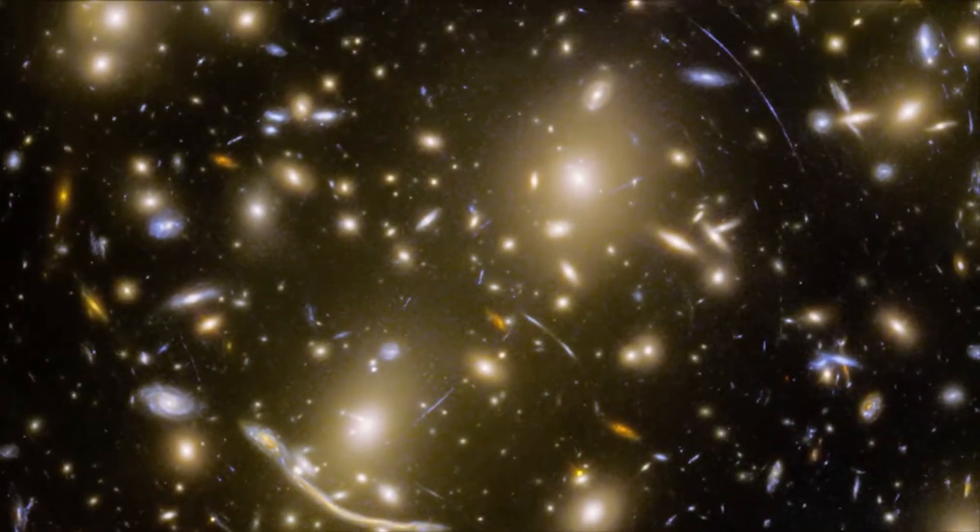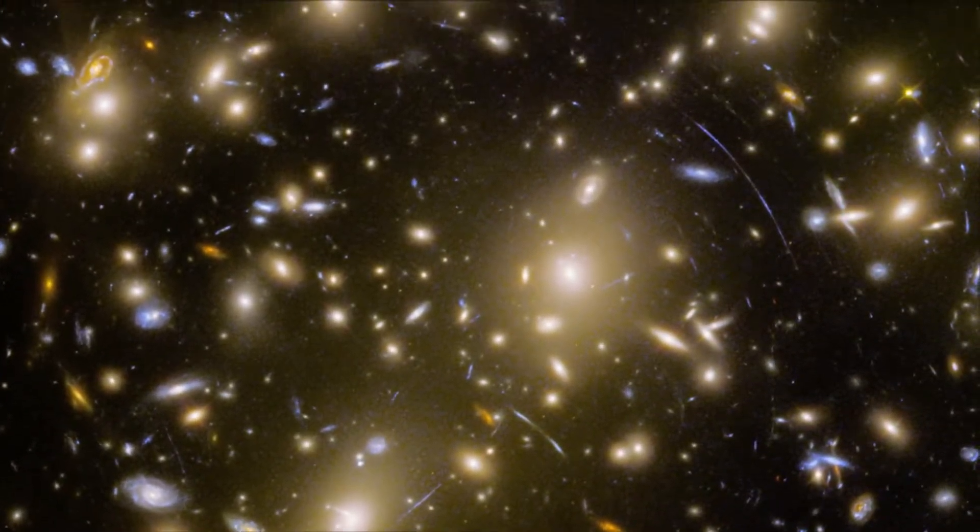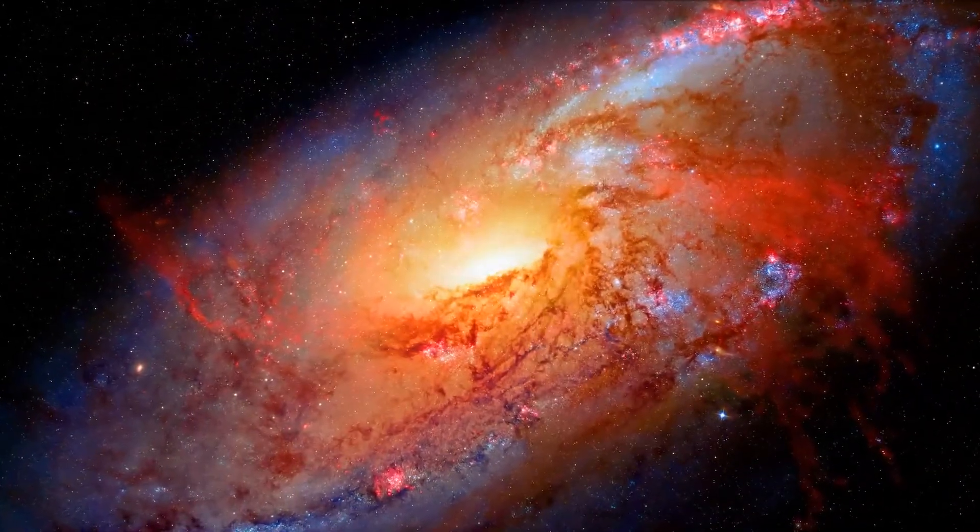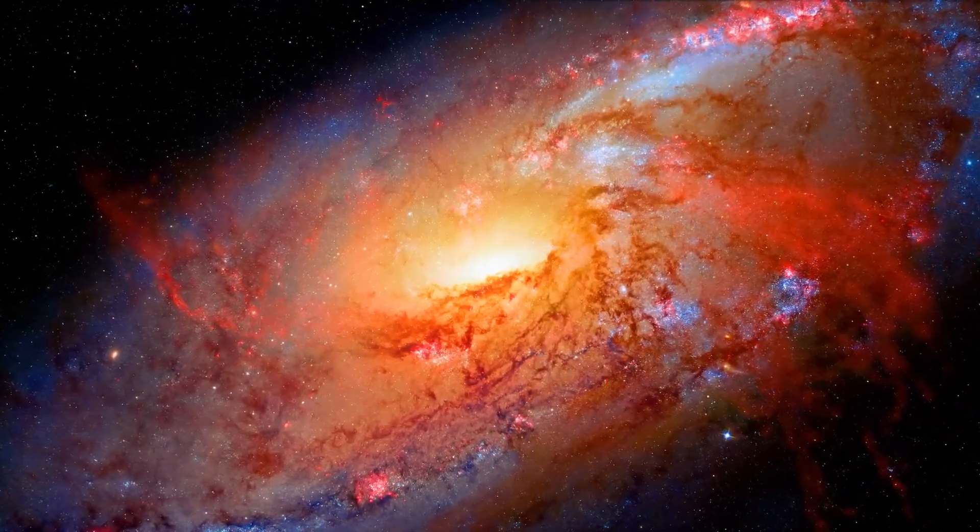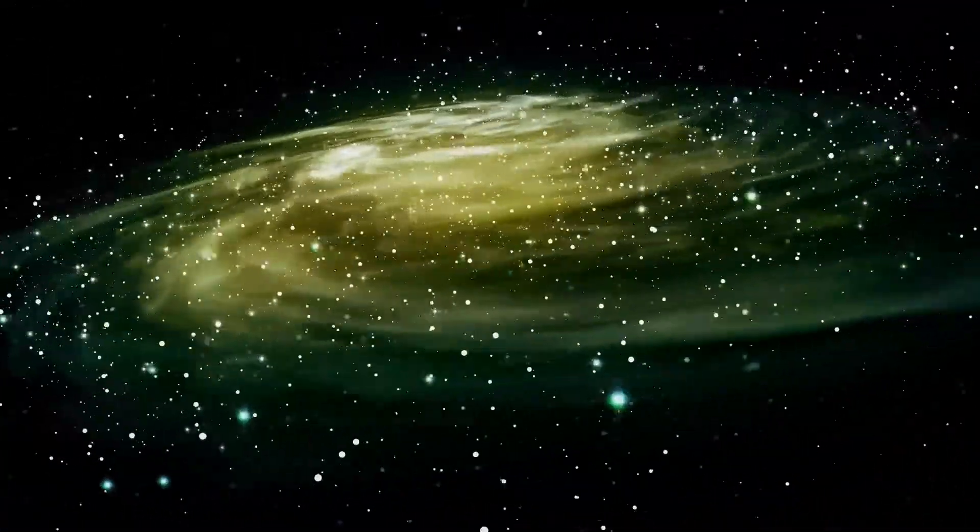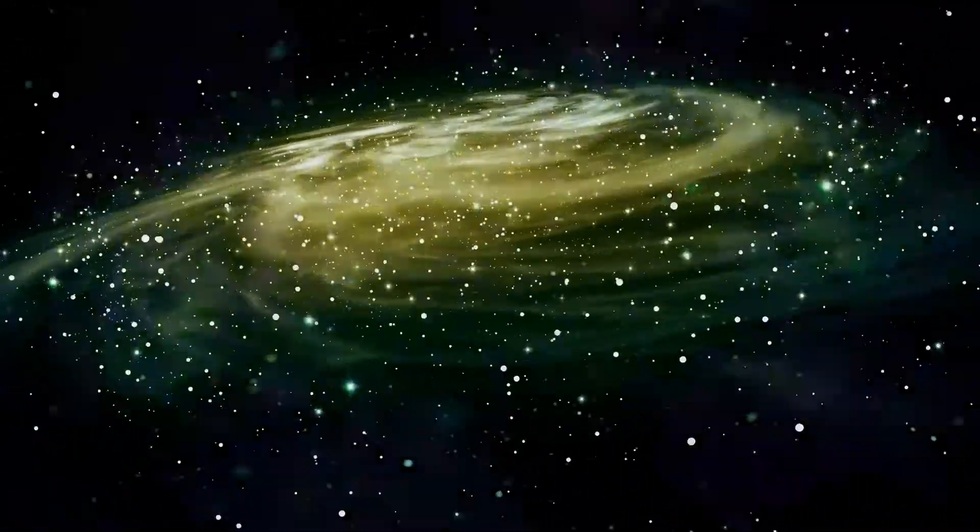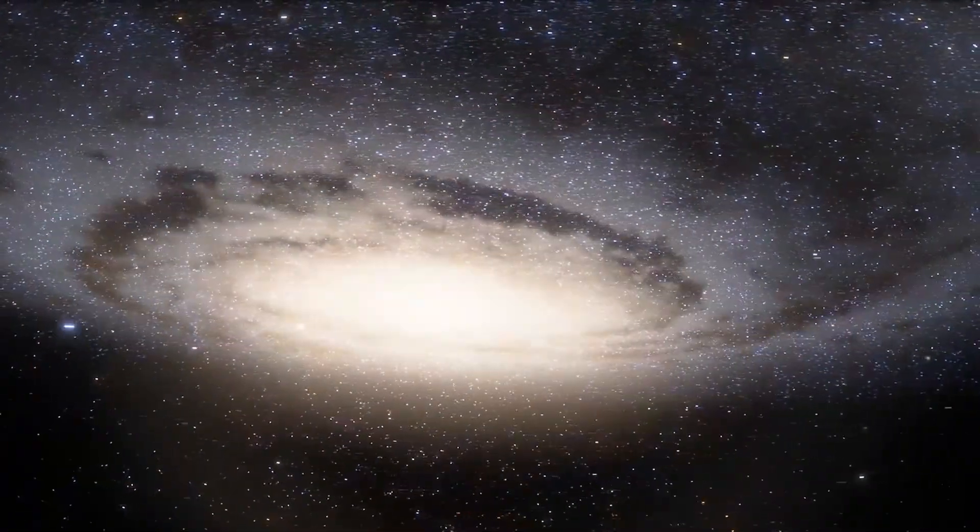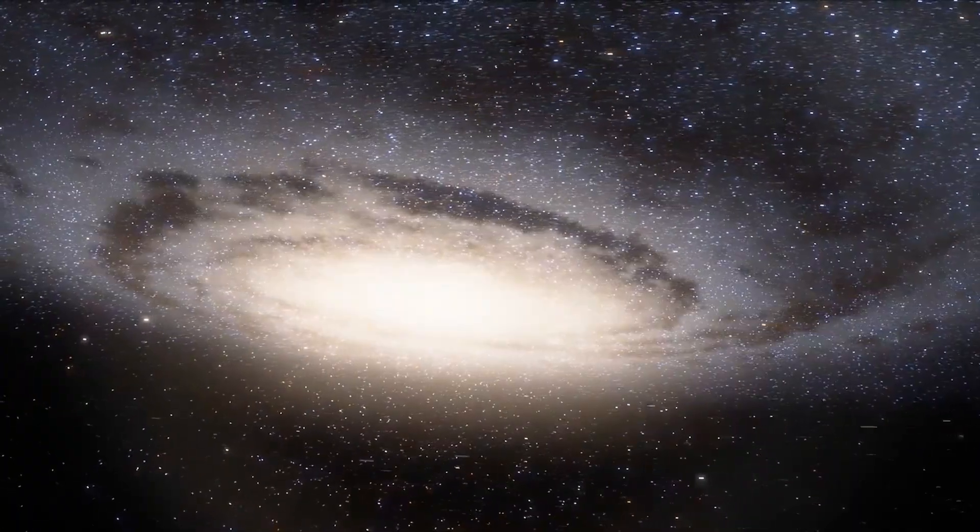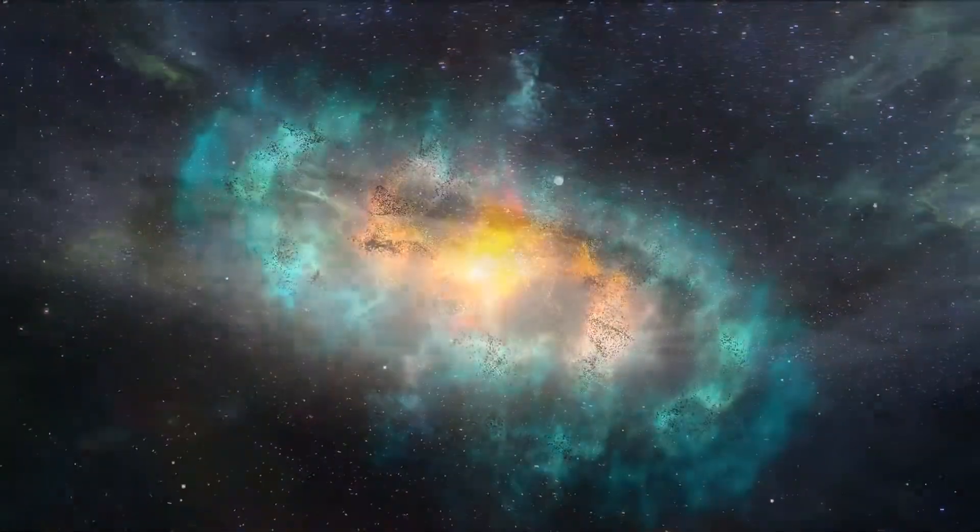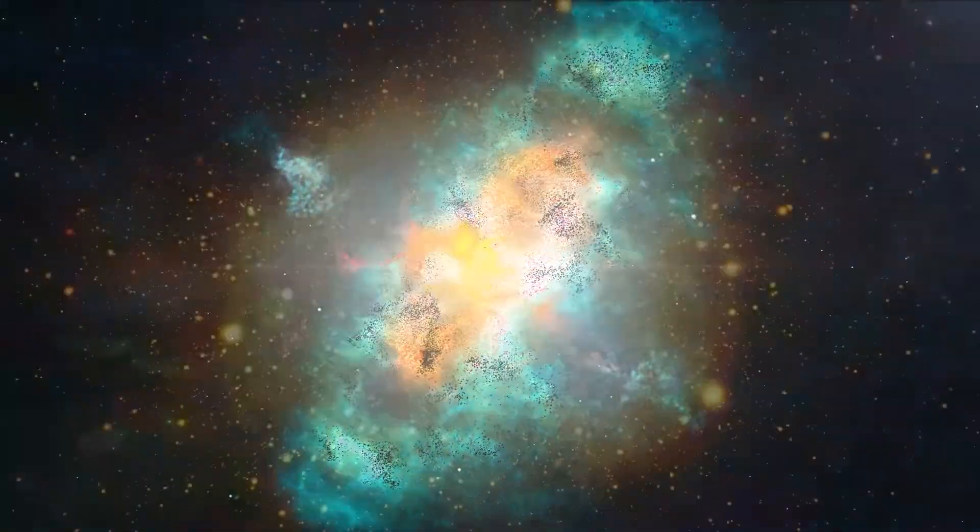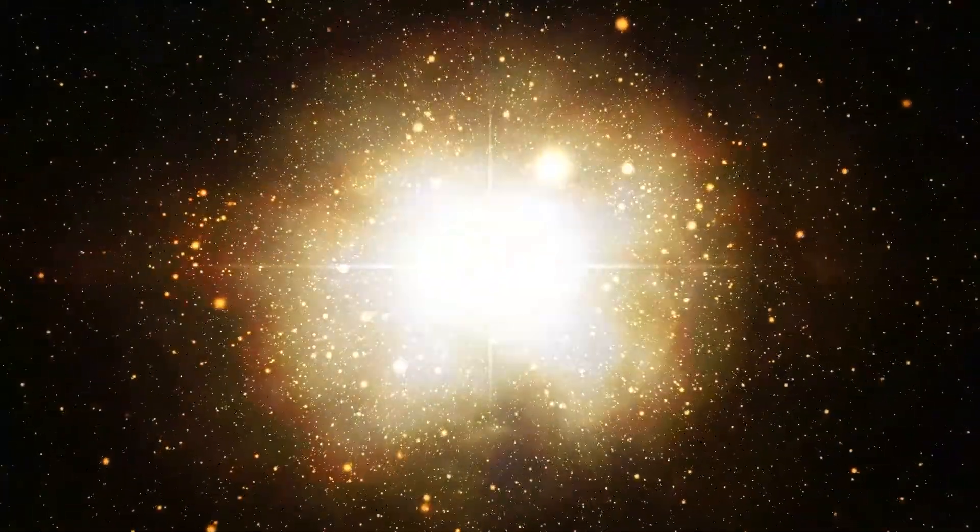The first indication that early galaxies are a little bit brighter than we had anticipated, making them simpler to discover, came from Maisie's galaxy. Our understanding of how stars emerge in the early cosmos may require some correction. It's likely that galaxies form stars more quickly than we previously believed. Perhaps they're simply producing stars at a faster pace, which makes galaxies brighter and simpler to observe.